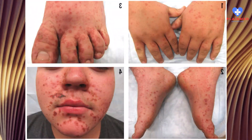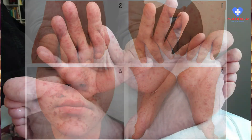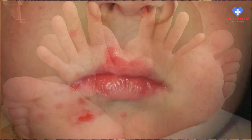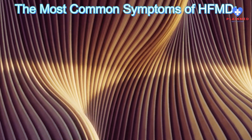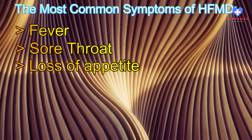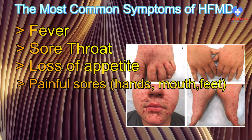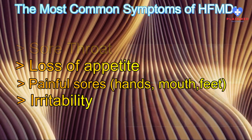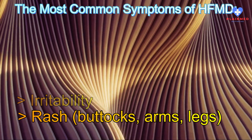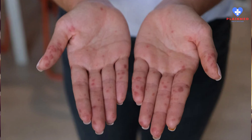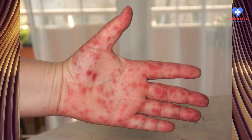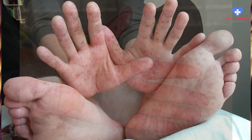The signs and symptoms of Hand, Foot and Mouth Disease can vary depending on the age of the person infected and the specific virus causing the infection. Some people may not experience any symptoms at all, while others may have mild to severe symptoms. The most common symptoms of HFMD include fever, sore throat, loss of appetite, painful sores or blisters in the mouth, on the hands and on the feet, irritability in infants and young children, and rash on the buttocks, arms and legs (less common). The sores or blisters in the mouth can be painful and may make it difficult to eat or drink. The sores or blisters on the hands and feet may also be painful and can make it difficult to walk or use the hands.